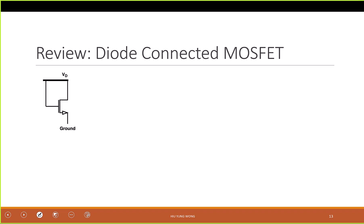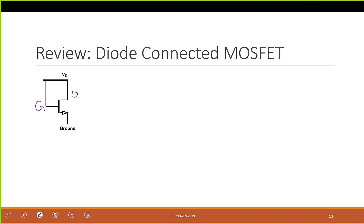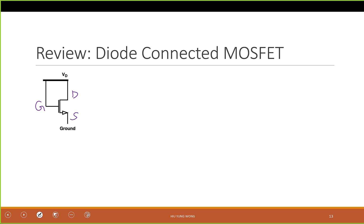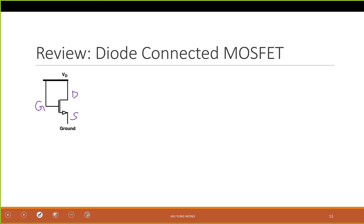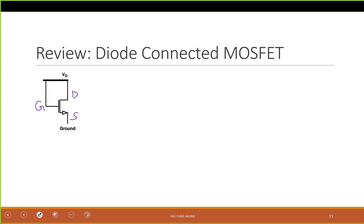This is a MOSFET. This is the gate, this is the drain, this is the source because of the bias. Is this transistor in saturation or in linear mode?